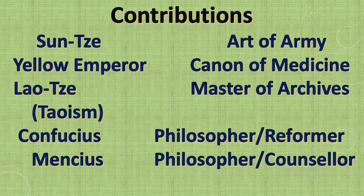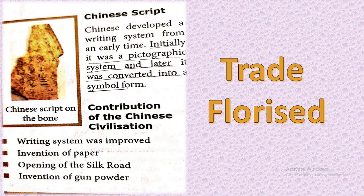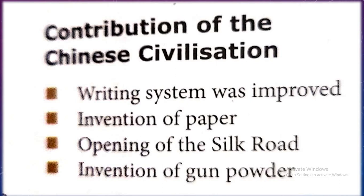The Chinese had a pictographic form of writing which was later converted into a symbol form. Their contributions to the world include the written script system, the invention of paper, the opening of the Silk Road especially for trade, and the invention of gunpowder. With that, we end today's session — thank you.